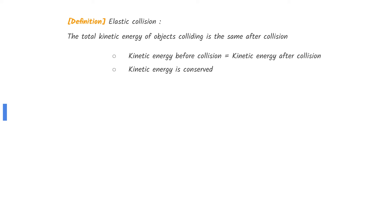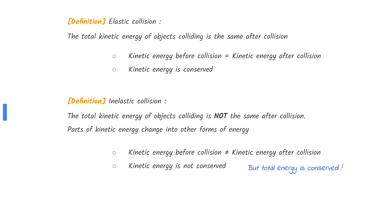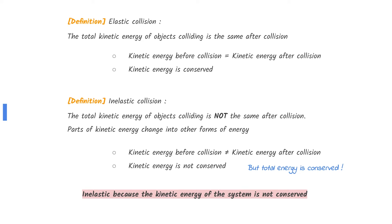Elastic collision is when the total kinetic energy of the objects colliding stays the same after the collision — kinetic energy is conserved. Inelastic collision is when the kinetic energy is not conserved; kinetic energy before the collision does not equal the kinetic energy after. Note that the total energy itself remains the same. Since the speed of the ball changes after the bounce, so does its kinetic energy. Therefore, this is an inelastic collision.